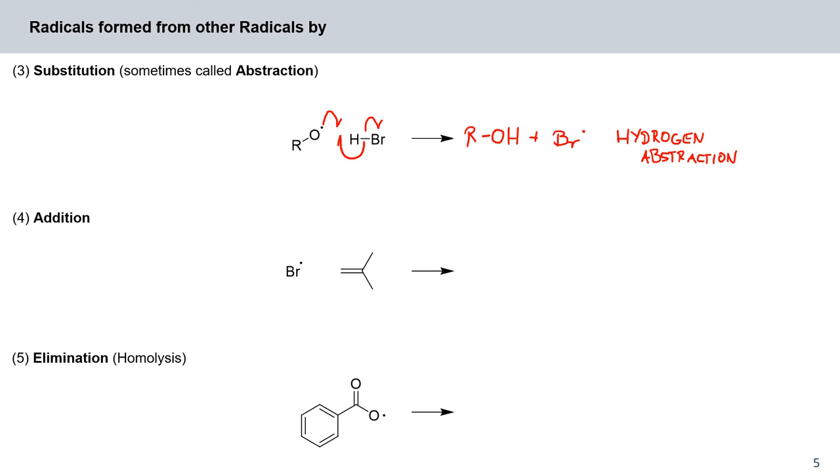Another example is the addition of a radical to an alkene. Here our bromine radical adds to this alkene bond and we're generating a new carbon-centered radical and a new carbon-bromine bond.